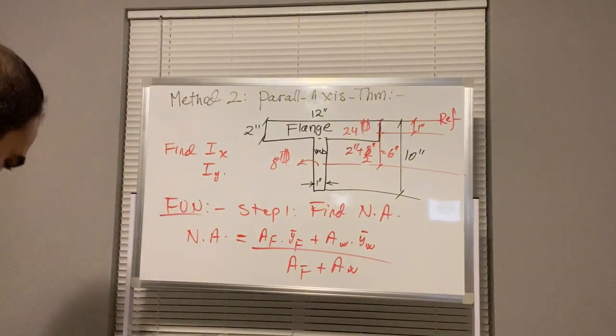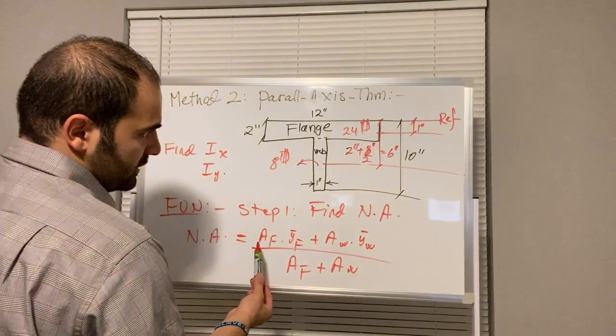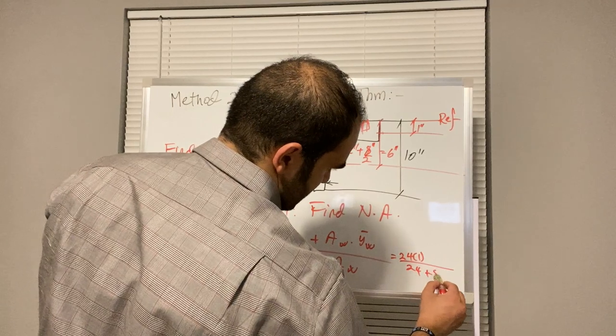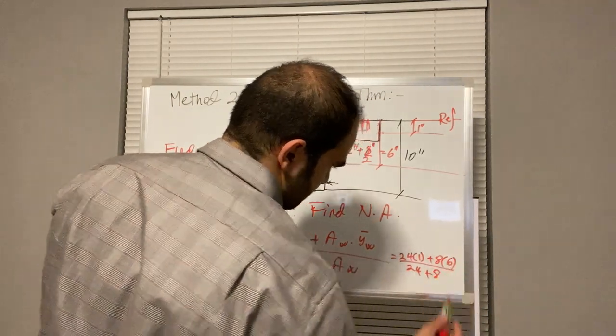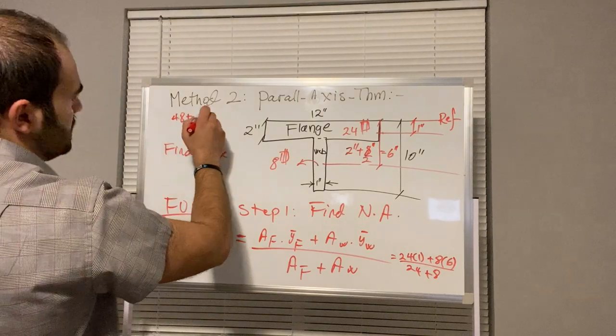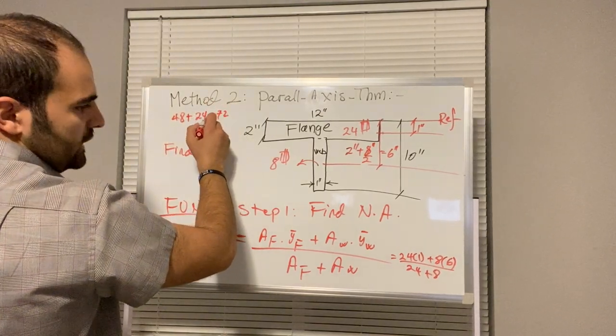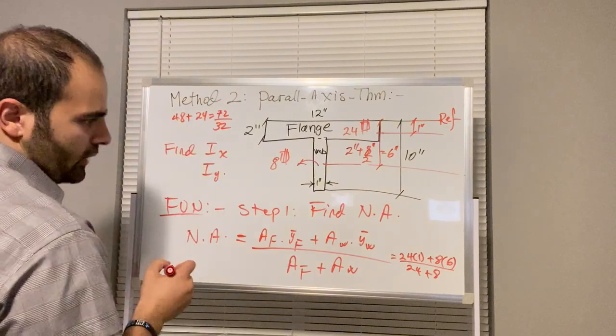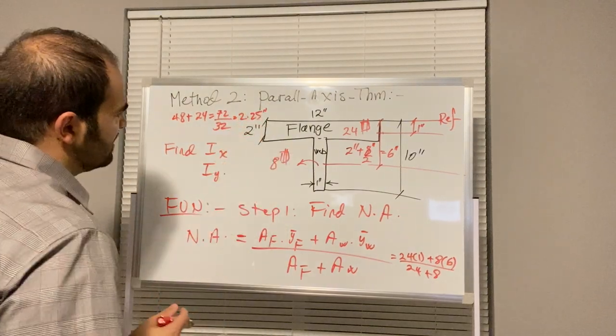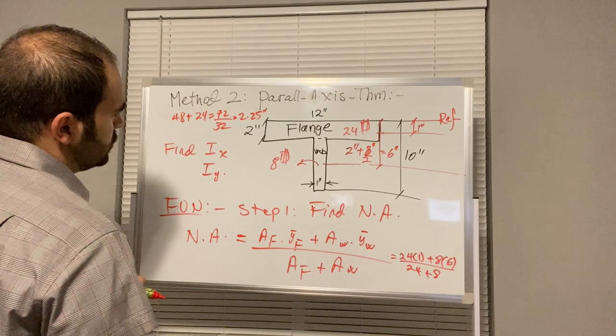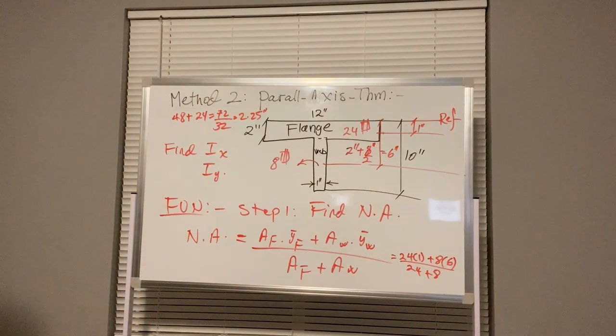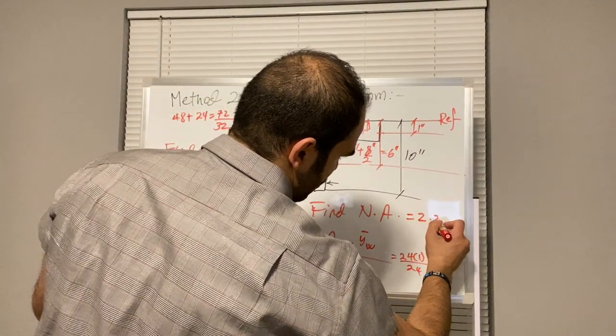Just plug and check. We've got AF 24. So that's 24 times 1 over 24 plus 8, plus 8 times 6. So that is 48 plus 24, that's 72, divided by 32. Which is, if we say 2.25. So we've got, let's say the neutral axis is 2.25 inches.